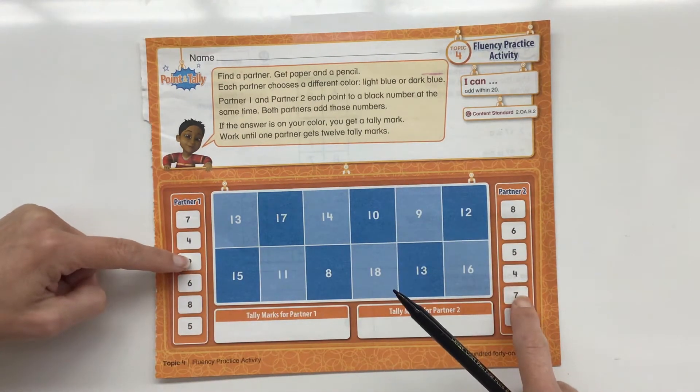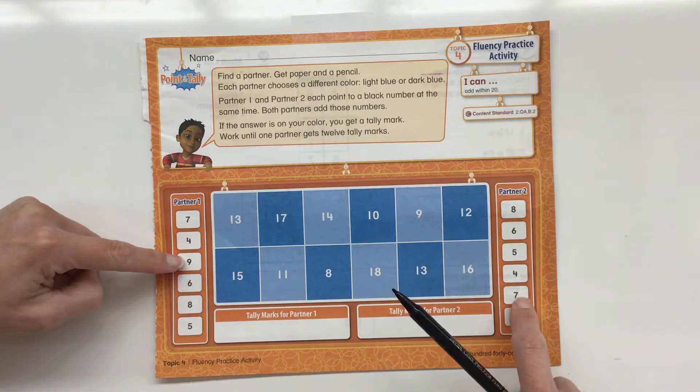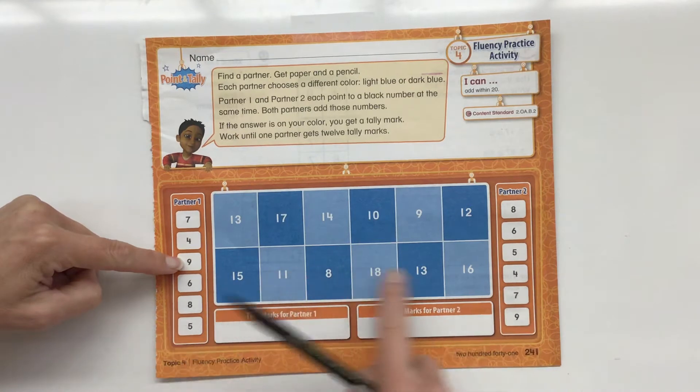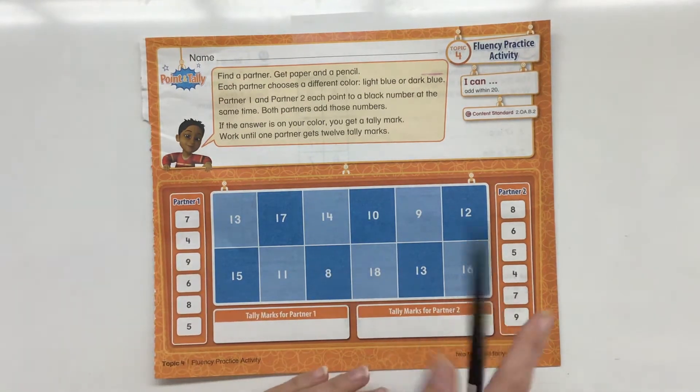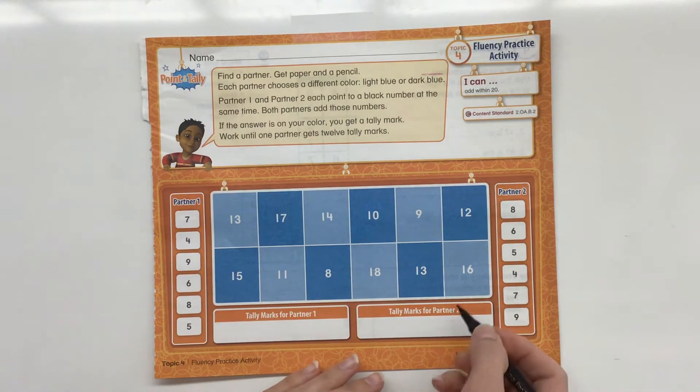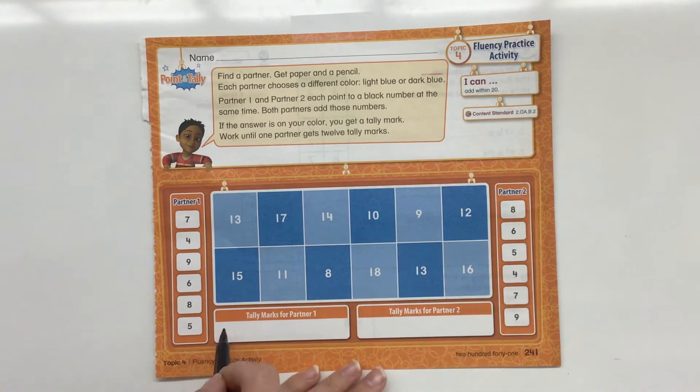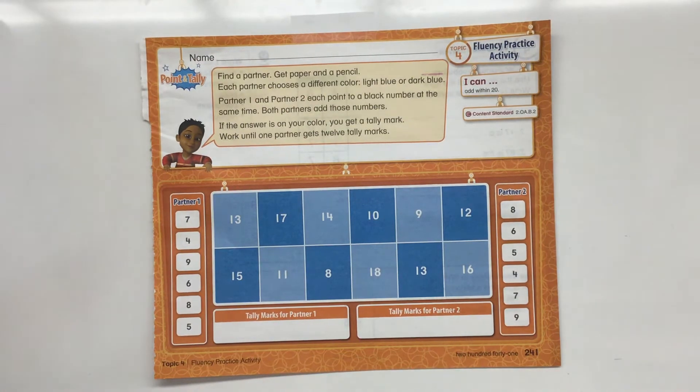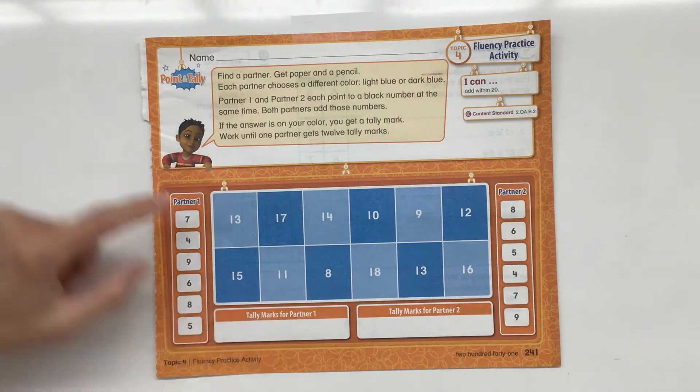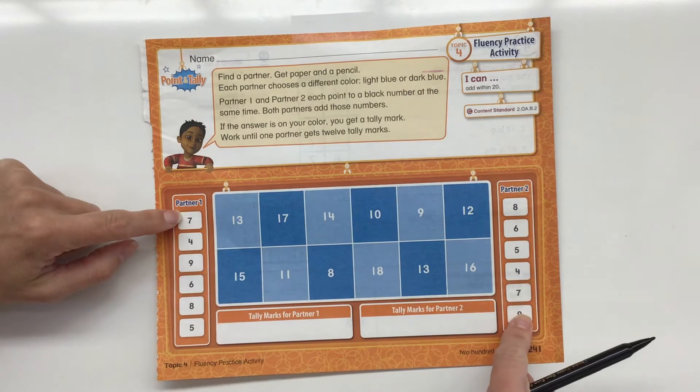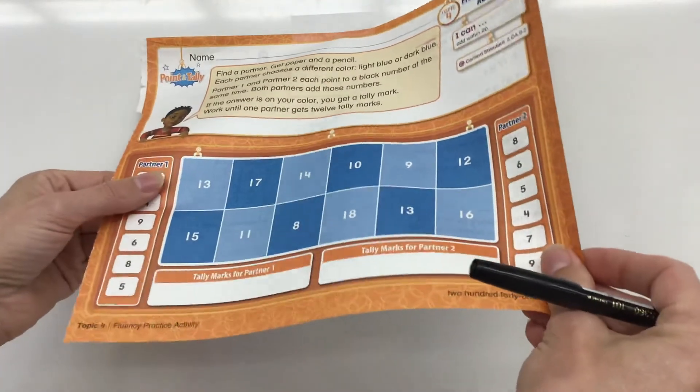And then both partners add those numbers. So six plus seven. Six plus seven I know is 16. 16 is light blue. So what you do is if you're a light blue partner, you put a tally mark here. If it lands on your number and it's a dark blue, you can put a tally mark over here. So or you can play it by yourself. You can just be one partner and you can go through and pick out the numbers, cross them out, and then try to add them together. So that's just a fun little activity to do.